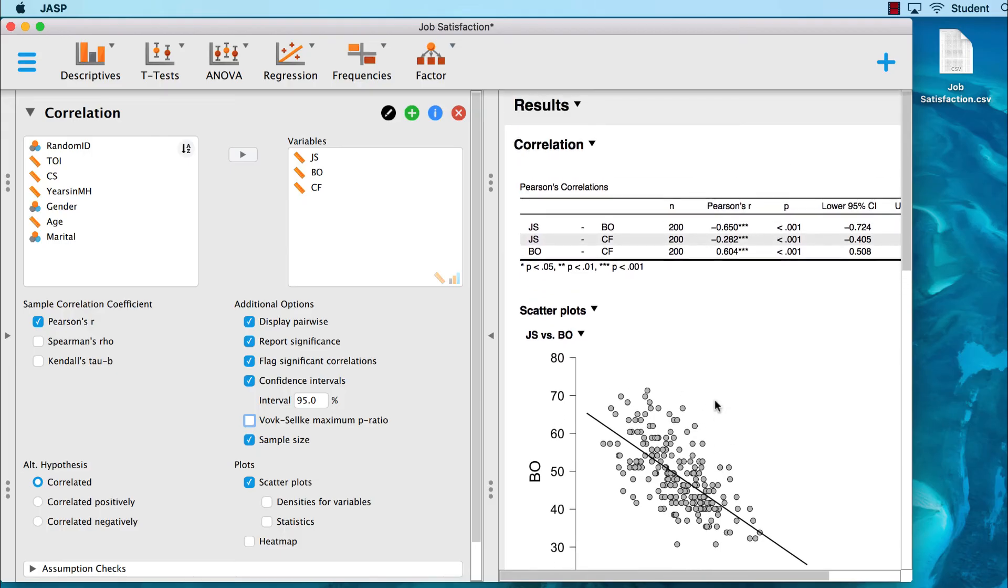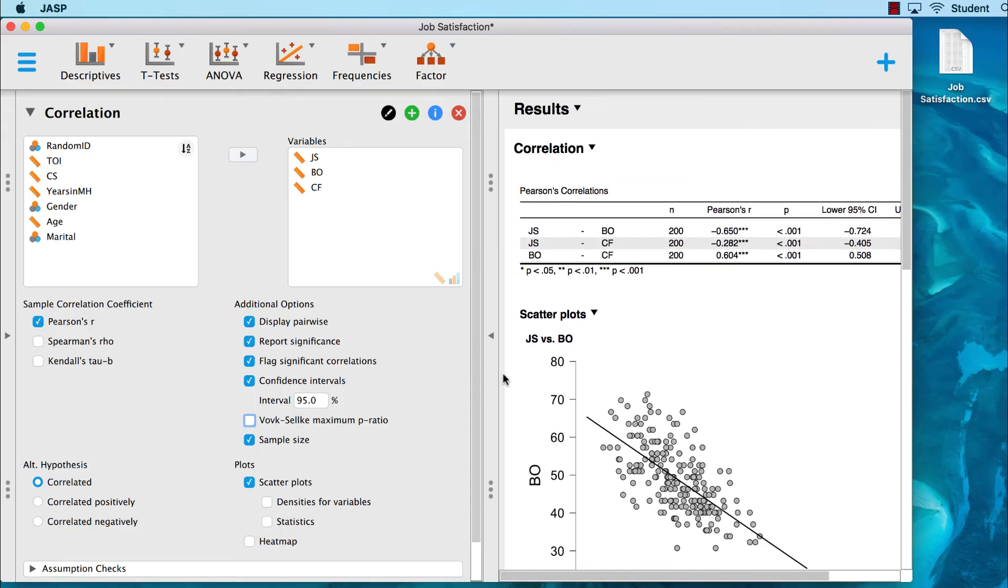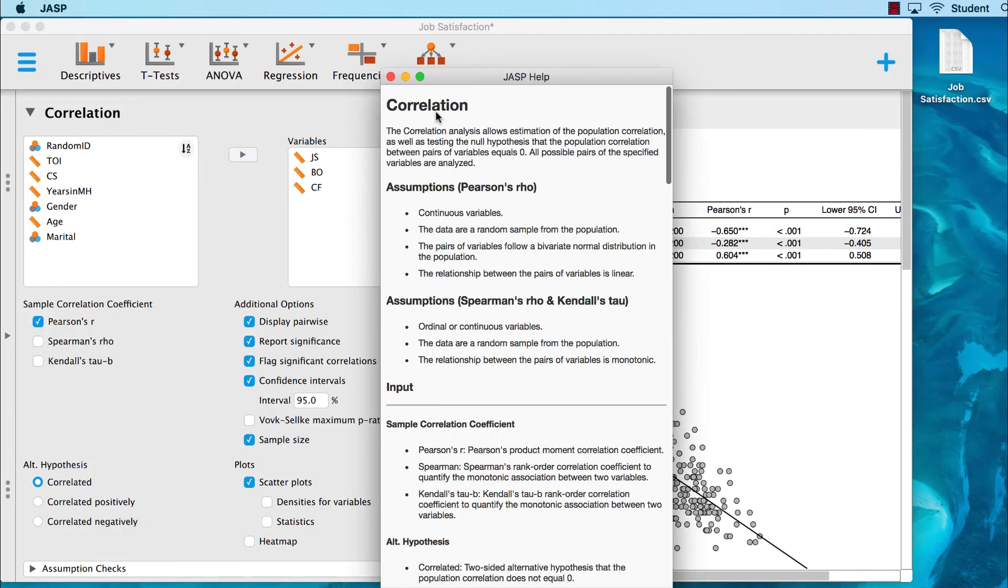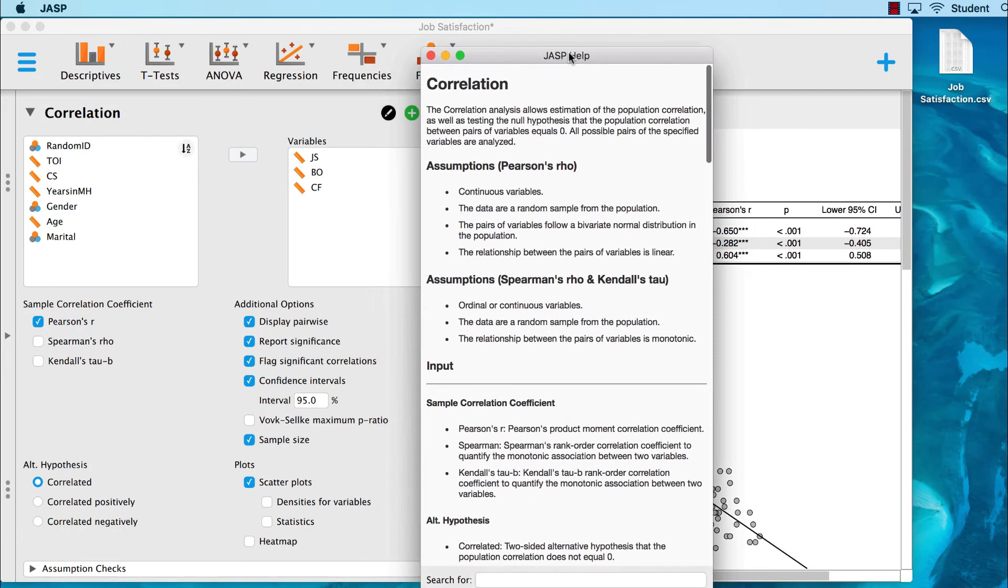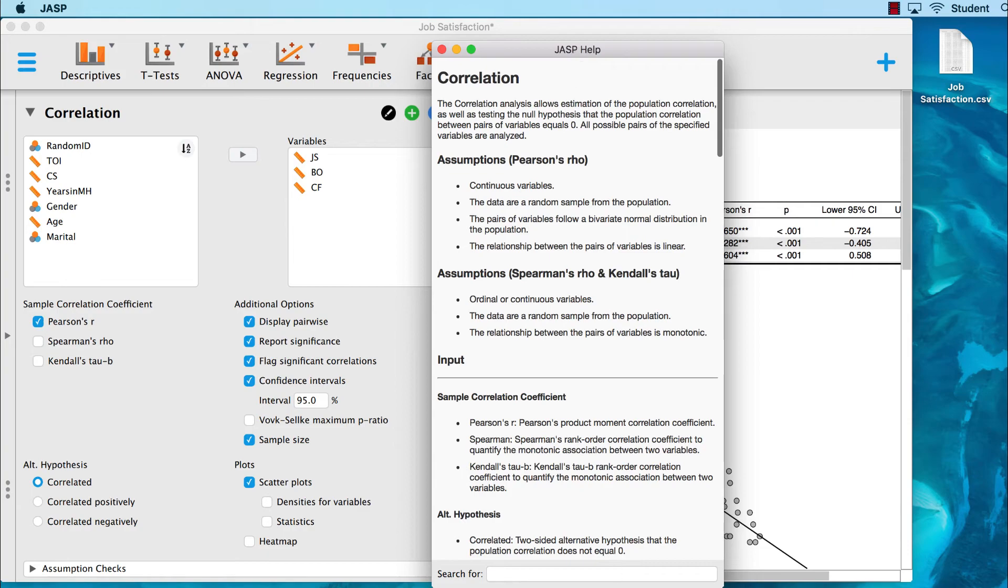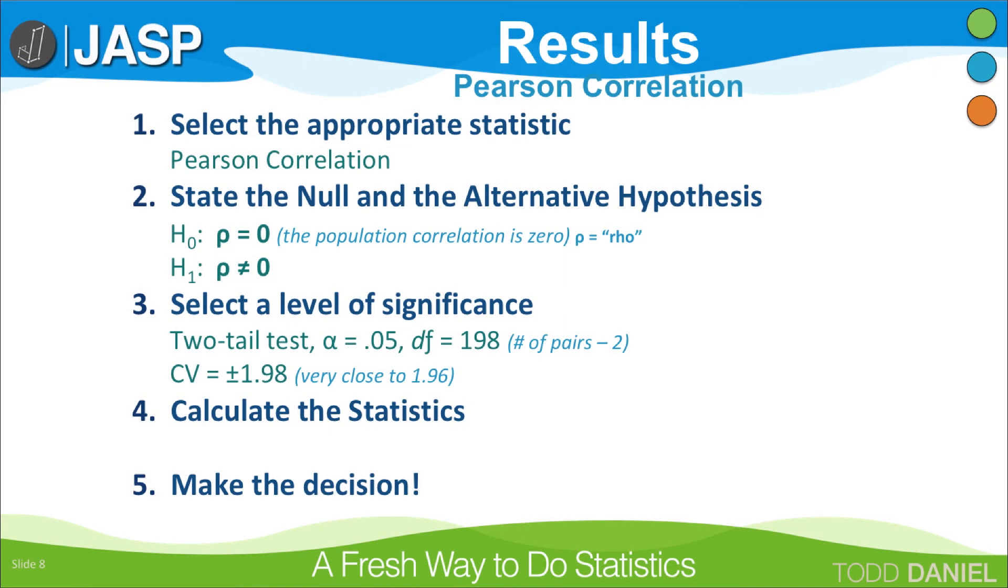And finally, remember that if you ever need information about what each of these options does, you can click on the blue eye to show info for analysis. Returning to our five steps of hypothesis testing, we are ready to calculate the statistics. But because we have so many correlations, these will go better in a table. We will be able to copy this table directly from JASP.